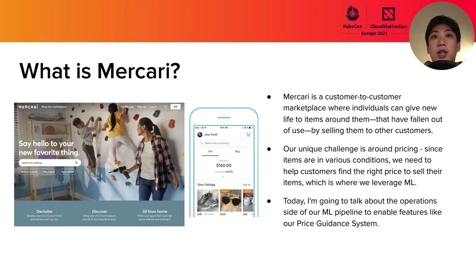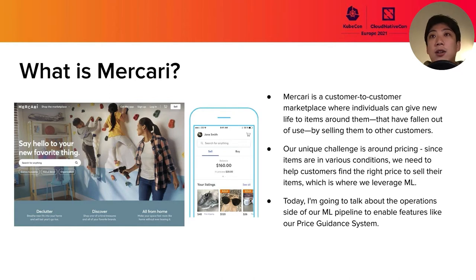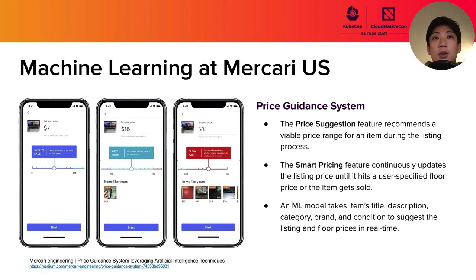One of our unique challenges is pricing. For sellers, if the item price is too expensive, it takes time to close the deal. On the other hand, if the item is too affordable, the seller cannot make a profitable sale. To help solve this problem, we use machine learning models. We call that system the price guidance system.